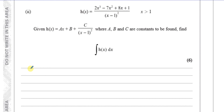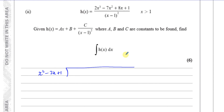Probably the easiest method is algebraic long division, so that's what I'm going to do. I'll write the denominator in expanded form as x squared minus 2x plus 1, and divide that into the numerator expression. The numerator has x cubed as the highest term, then minus 7x squared, plus 8x, and plus 1.